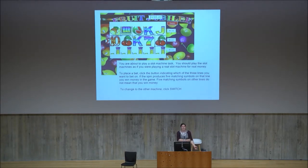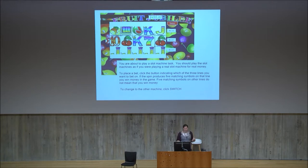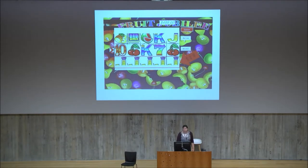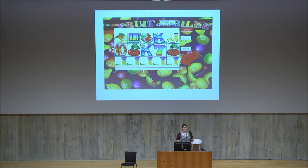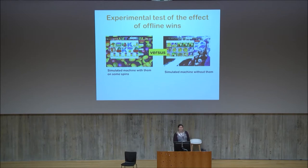This version has three lines, so we're getting closer to a real machine. Now you have two machines to choose between, and you can switch from one to the other by clicking the red switch button. We say to the student participants: just pick which one you want to play, try to win, play like you're playing for money. One of the machines has offline wins — wins on a line you didn't bet on, as shown by that arrow. One of the two machines had that possibility; the other never does. The idea is that if missing out on a win on another line is frustrating, you should prefer the machine where that frustrating thing never happens.